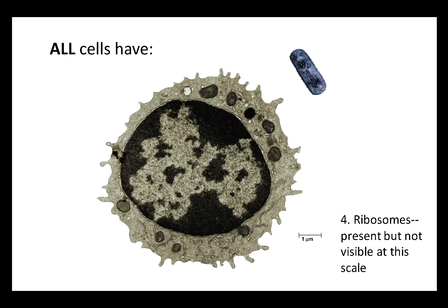Last but not least, you need the machines that can take the genetic code and use it to build proteins, and those are the ribosomes, which we'll talk more about in a future video. They're too small to be visible in this image. What we're looking at here are electron micrographs of a large eukaryotic cell and the much smaller prokaryotic cell.